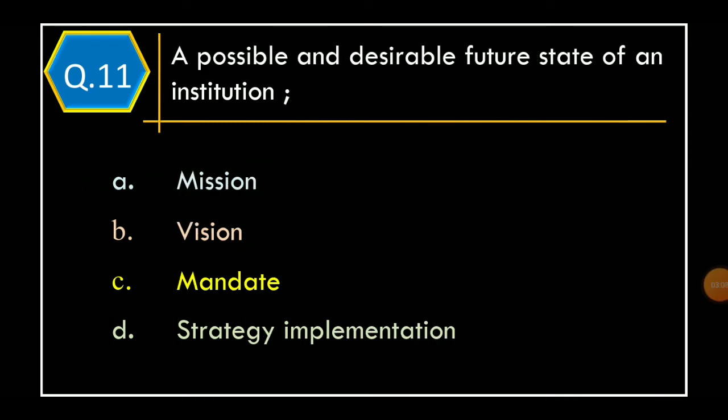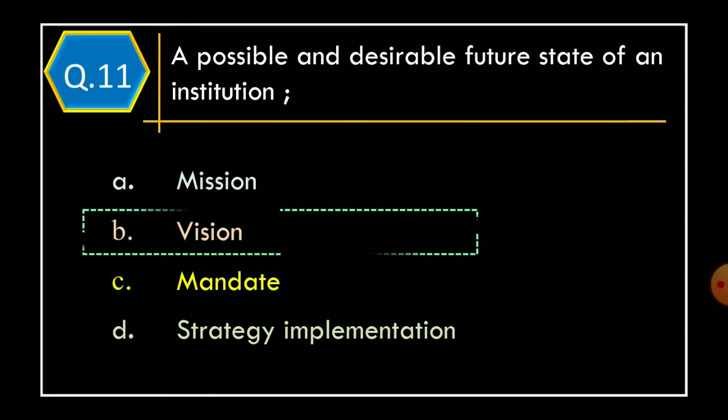Question 11. A possible and desirable future state of an institution. Option A: Mission. Option B: Vision. Option C: Mandate. Option D: Strategy implementation. The correct option is Option B: Vision.